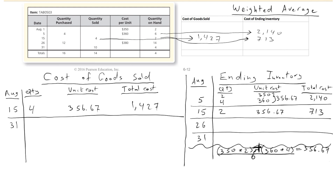There's also another way to find the ending inventory balance: subtract $2,140 minus $1,427, because the $1,427 came out of the $2,140. The $713 is simply what remains of the $2,140 after selling $1,427 of inventory. You can use either approach to check your work — both give $713.